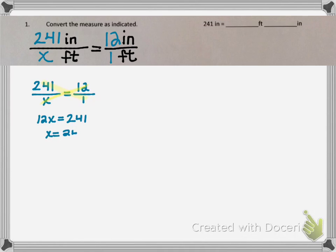My next step is to divide by 12 to solve for x. x equals 241 divided by 12, or 241 over 12.